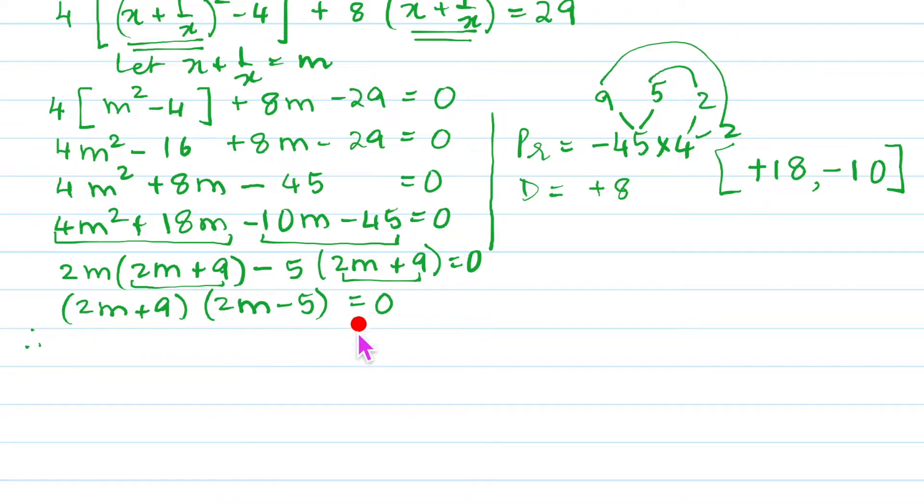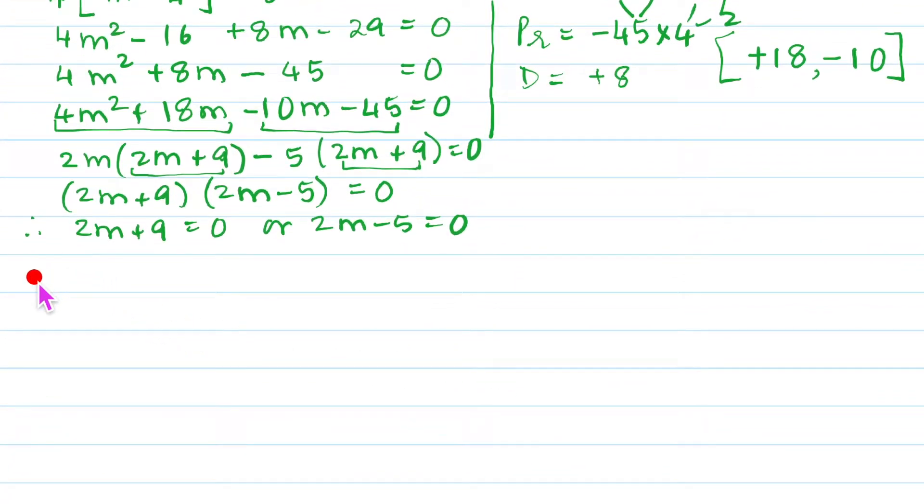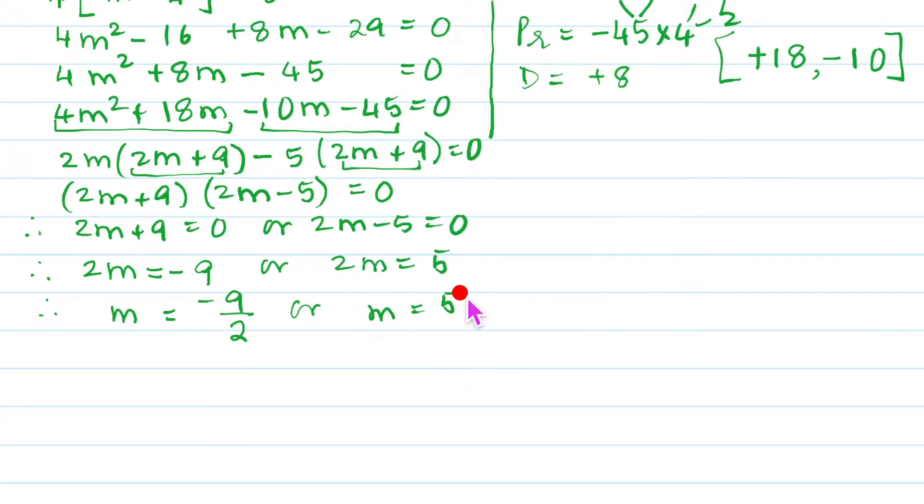Now we will use the zero product rule and we will say 2m + 9 = 0 or 2m - 5 = 0. So that is going to give us 2m = -9 or 2m = 5. And therefore, we will have m = -9/2 or m = 5/2. Did you understand this much?